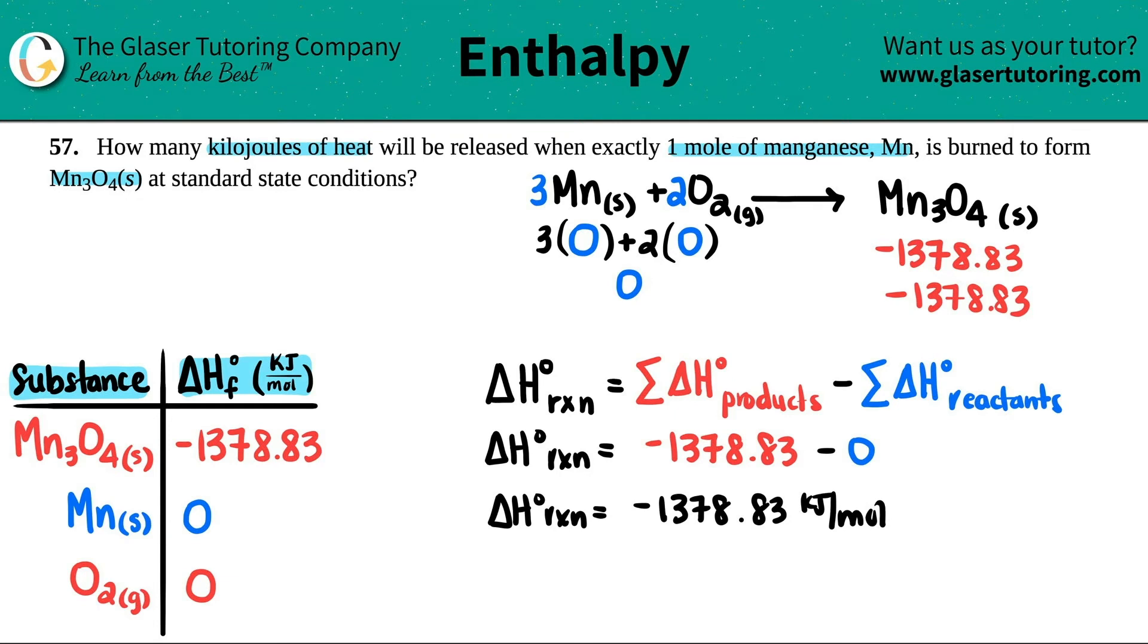But that's not what they're asking. They're asking for how many kilojoules of heat will be released with exactly one mole of manganese. Now technically, how many moles of manganese is in this equation? There's three manganese moles. So I have to set this up as a ratio. I can say that the negative 1378.83 kilojoules is equal to - well, moles. But now if you want to be specific, since they're asking for one mole of manganese, I have to pick manganese Mn. But in the balanced equation there's three moles of Mn, so just be careful.